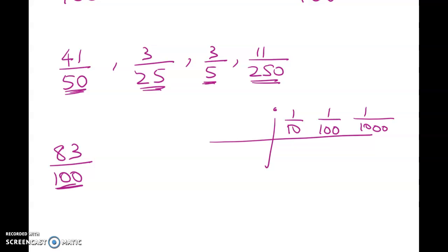If we've got 83 hundredths, that means we would like to be squeezing 83 into here, but we can't, so we can say that we've got 8 tenths and 3 hundredths.